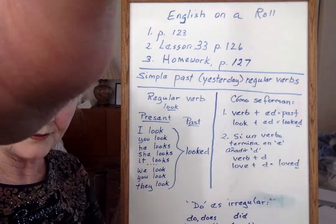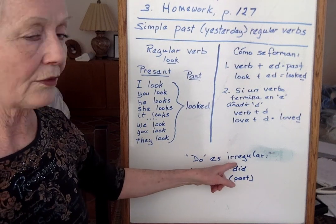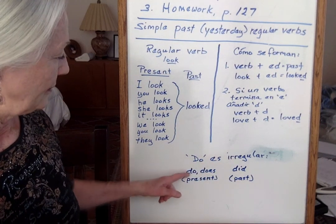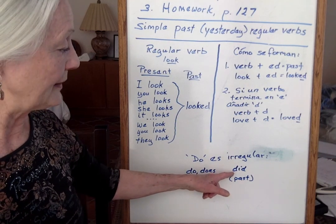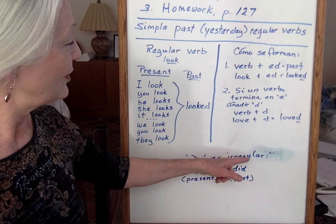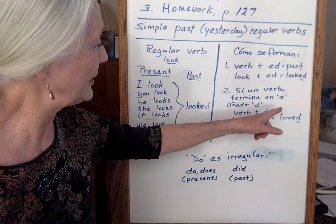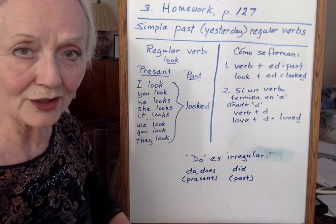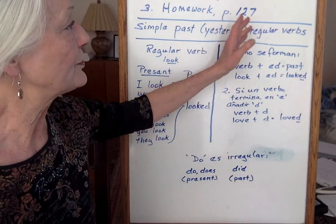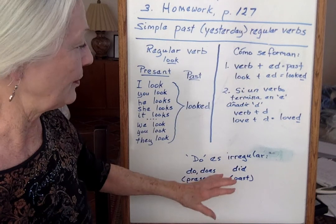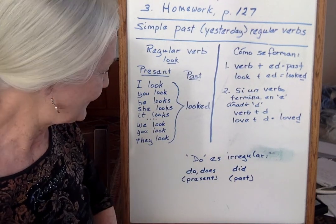Do es irregular. Por qué? Tenemos do, en does, en presente, pero did — no es, no hay un -ed. Did is irregular. Y hay, el más verbos son regulares en inglés, pero hay importantes verbos que son irregulares.